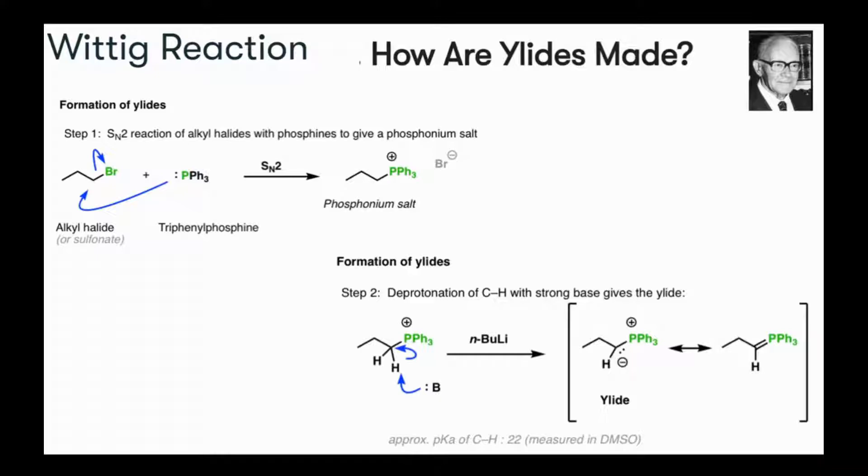So let's have a look at how ylides are formed. In step 1, it's an SN2 reaction that involves alkyl halides with phosphines to give you the phosphonium salt. This is triphenyl phosphine. The lone pair of phosphorus acts as a nucleophilic part and it attacks on this electrophilic carbon, and the bromine group leaves.